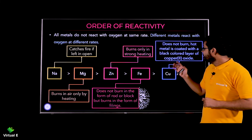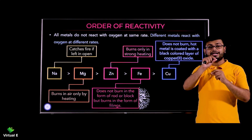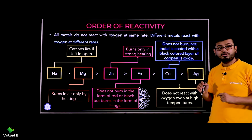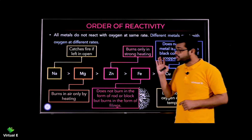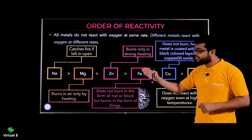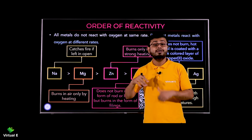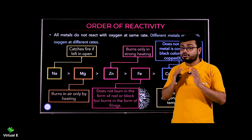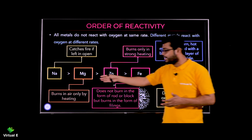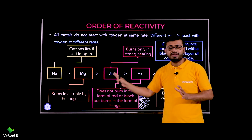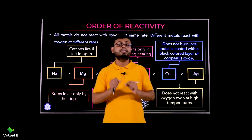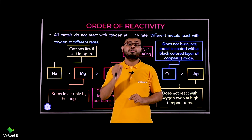Next is copper — copper does not burn but forms a metal oxide coating above it. Finally, silver and gold — they don't react at all. This is the reactivity series. If you go from left to right, the reactivity is reduced. The order is: sodium, then magnesium, then iron, then copper, and finally silver. This is how metals react with oxygen. Now let's discuss the nature of metallic oxides.